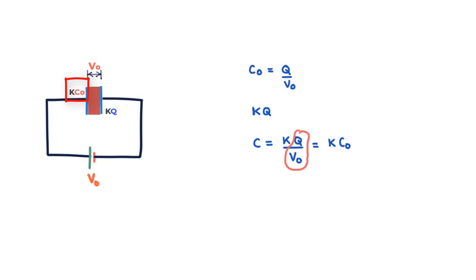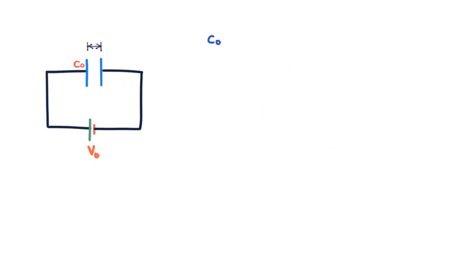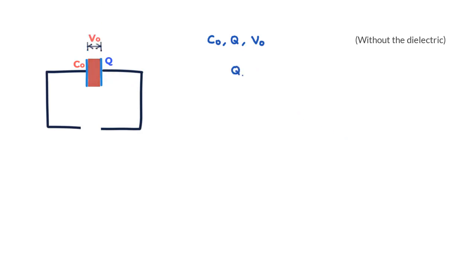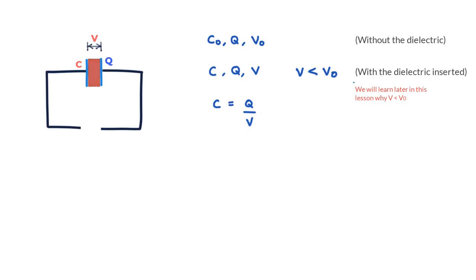Next we consider the same setup differently. We charge up the capacitor to value Q and remove the battery. The potential difference between the plates is V₀. With the battery removed and the circuit open, charge has nowhere to go but stay on the plates. When we insert a dielectric, the potential difference drops to a new value V. The new capacitance is C = Q/V. Since V is smaller than V₀, the capacitance has gone up. So in either case, introduction of a dielectric results in an increase of capacitance.